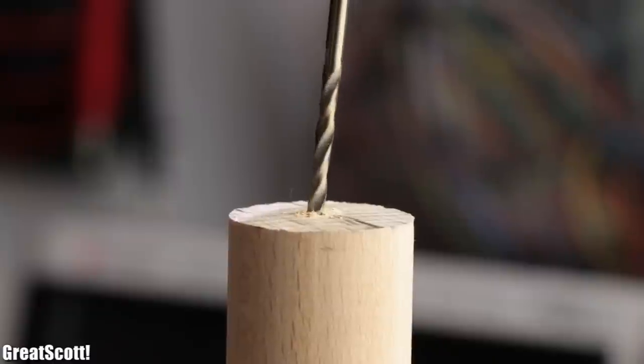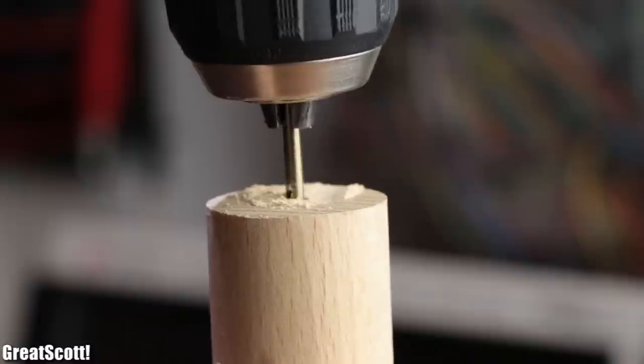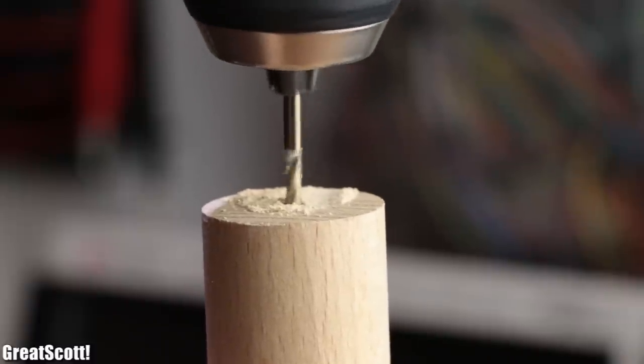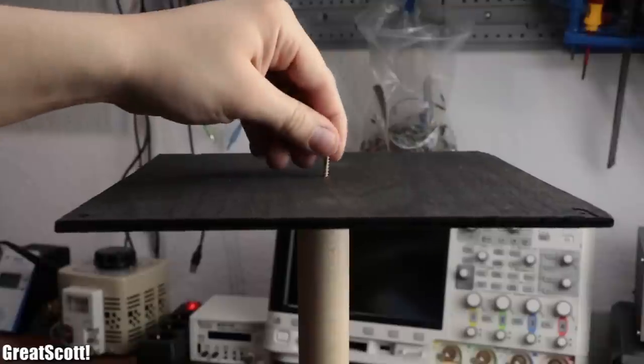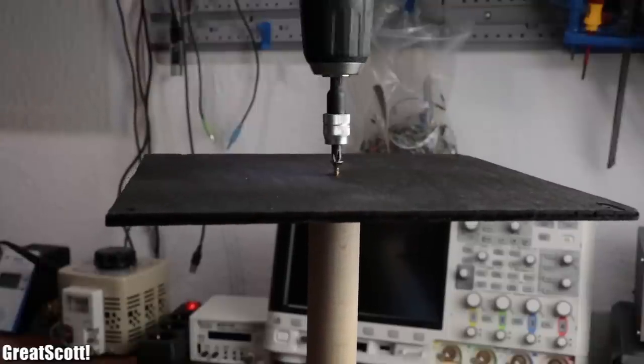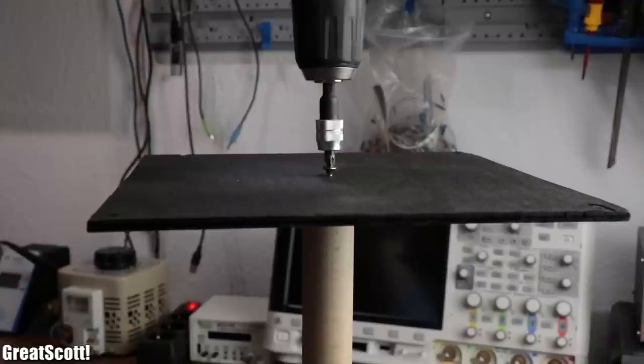And after drilling a 3 millimeter hole in the center of the spar from both sides, it was finally assembly time. I started by using an M4 wood screw to secure the square plywood piece with the center hole to the spar.